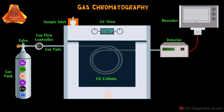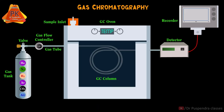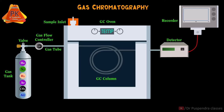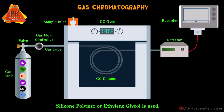The next part of the GC instrument is the GC column. Two major types of columns are available: the capillary column and the packed column. Generally, the capillary column is used in GC and its length will be 1 to 300 meters. The internal wall of this capillary column is coated with a high boiling point stationary phase like silicon polymer or ethylene glycol.